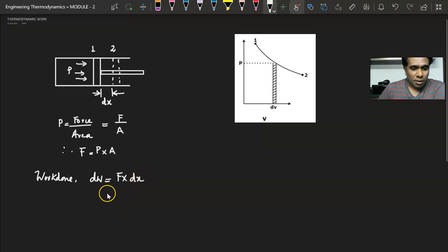Now I am substituting the value of force here, that is P into A, that is pressure into A into dx, which becomes the work done. Now this term A into dx is the volume. Area into the displacement becomes volume, therefore I can write dW is equal to P into dV.